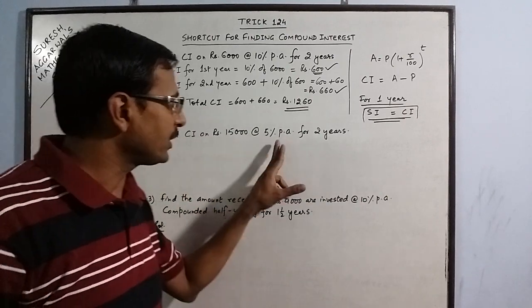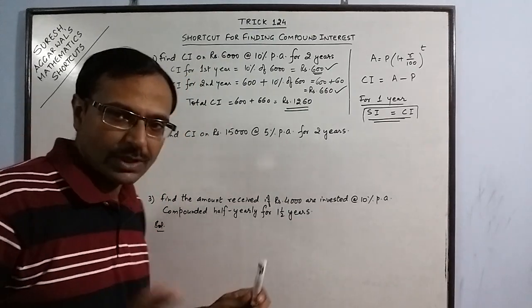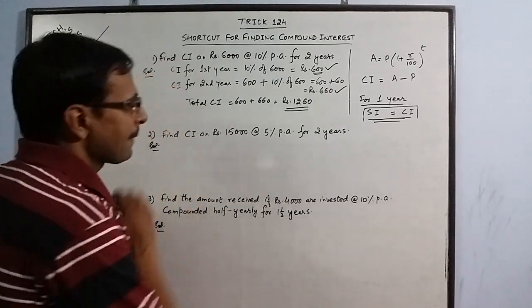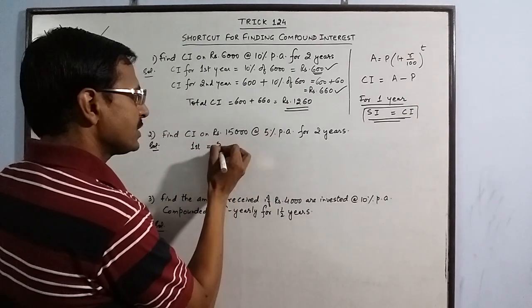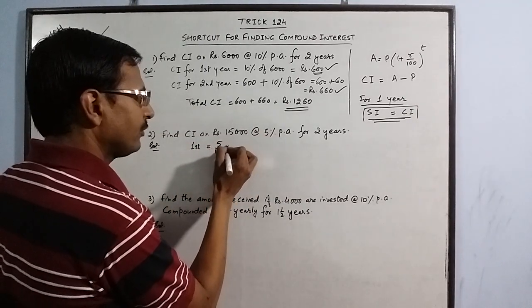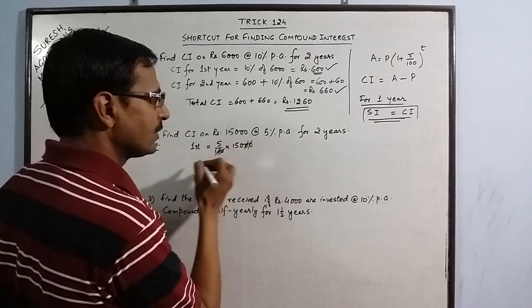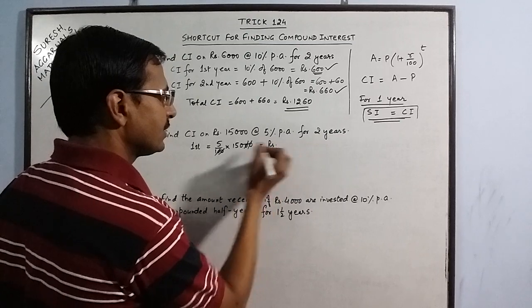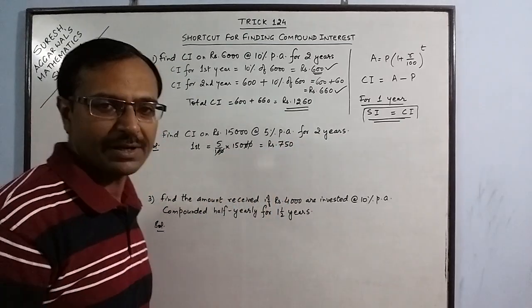I have changed the principal amount and the rate of interest. Time remains the same, two years. I will reduce the number of steps now. First year, 5% of 15,000. Two zeros cancelled, 15 fives up, 75. 750 is the interest for first year.